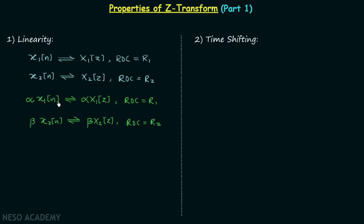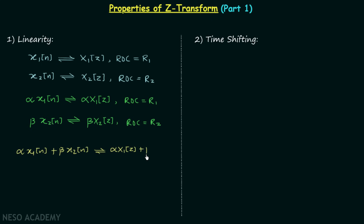Now let us add alpha·x1[n] and beta·x2[n]. We have a new discrete time signal alpha·x1[n] + beta·x2[n], and for this signal we are going to get a new Z-transform. The new Z-transform will be alpha·X1(z) + beta·X2(z).